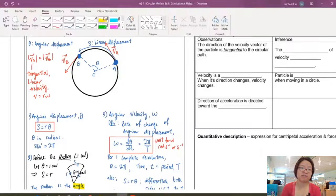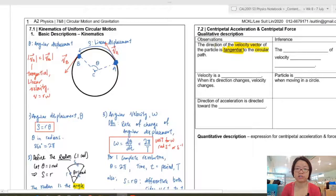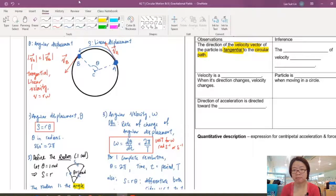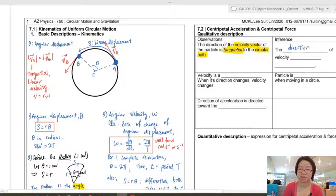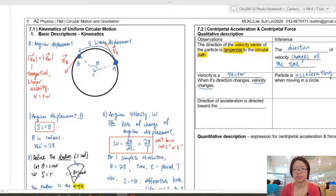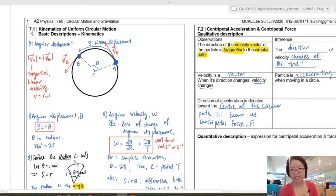So the first observation that I have is that VA and VB is obviously in a different direction. Because it's a circular path, if you want to be tangent to a circular path, you will not be in the same direction if you're at different points. So this shows that the direction of velocity changes all the time along a circular path. And since velocity is a vector, when the direction changes, velocity changes. So we can say that the particle is accelerating when moving in the circle. And the direction of acceleration is directed towards the center of the circular path C. Directed towards the center is known as centripetal. So we call this the centripetal force.